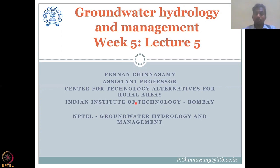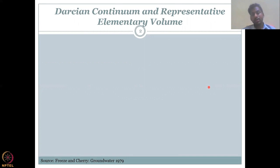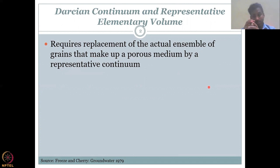In the last class, we looked at Darcy's application and the strength of Darcy's law, which is mostly for saturated systems. We will continue with the discussion on what are the limitations. Before that, let us define the volume in which Darcy's law holds good and what are the assumptions. Darcy's continuum and representative elementary volume is a very important aspect to consider while using Darcy's law. It requires a replacement of the actual ensemble of grains that make a porous medium by a representative continuum — instead of having particles and spaces, it is replaced by a continuous medium. It is called Darcy's continuum.